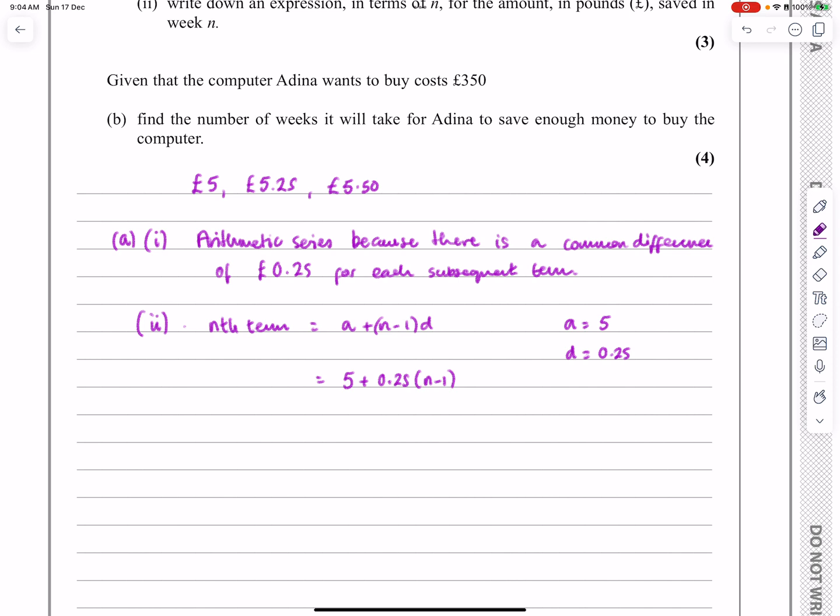So the nth term is just going to be 5 plus 0.25(n - 1). If you want to multiply that out, you can. You can just leave it like that. There's no reason why not. But if you want to actually write that as 0.25n, and then 5 minus 0.25 will be 4.75. Either one will do. That's the answer.